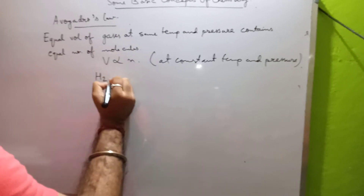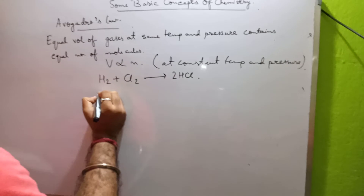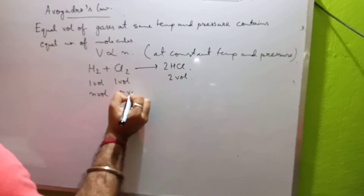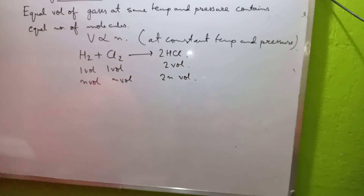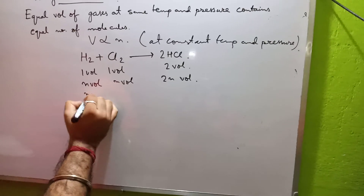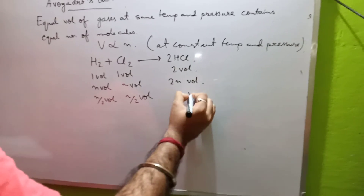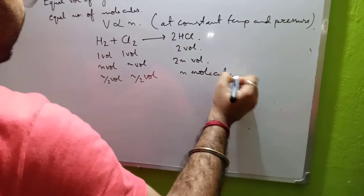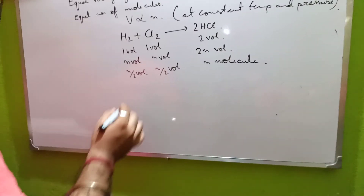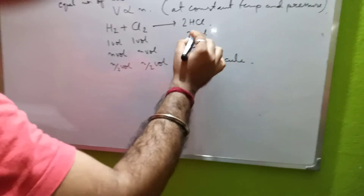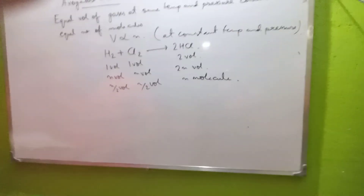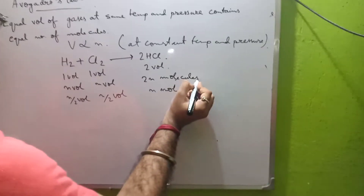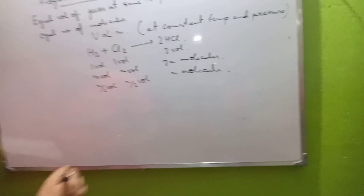For example, H₂ + Cl₂ → 2HCl. If H₂ is one volume and Cl₂ is one volume, HCl is two volumes. If we call H₂ as n volume and Cl₂ as n volume, then HCl will be 2n volume. If we halve it to n/2 each, HCl will be n volume — meaning n molecules. So x volumes of chlorine and hydrogen combining gives 2x molecules of HCl, and this depends upon the number of moles.